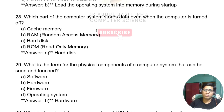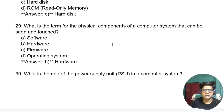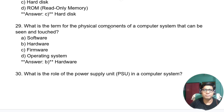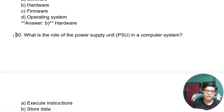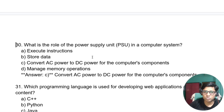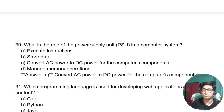What is the term for the physical components of a computer system that can be seen and touched? The answer is hardware, as opposed to software. What is the role of the power supply unit in the computer system? The power supply unit, or PSU, converts AC power to DC power for the computer components.